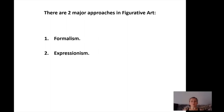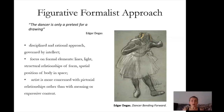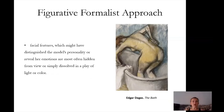Today I also want to touch on a little bit of philosophy and talk about two major approaches in figurative art: formalism and expressionism. Speaking about formalism, the approach of the formalist is very disciplined and rational, governed by intellect. Formalists focus on formal elements such as lines, light, structural relationships of form, and the spatial position of the body in space — not so much on expression. For example, the artist Degas — his work is an example of the formalist approach.